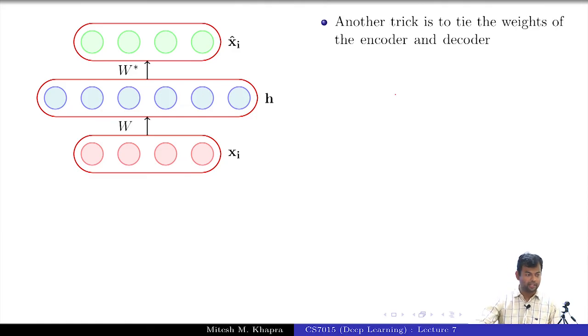Another trick which is typically used at least in the context of autoencoders is to tie the weights of the encoder and the decoder. How does that help? What does tying the weights mean?